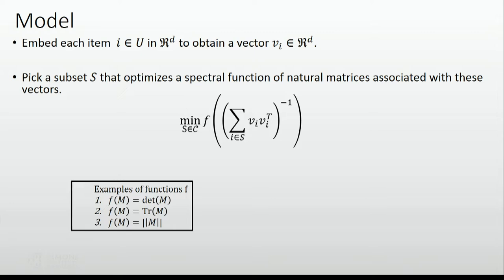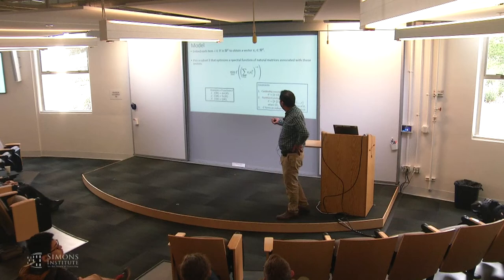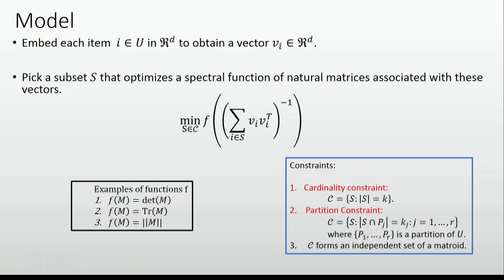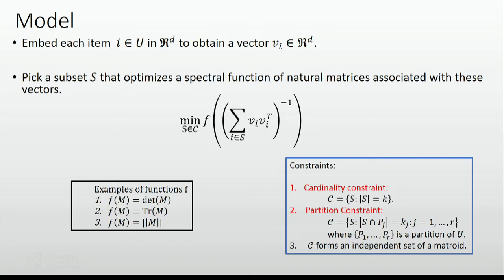The collection C can be constrained in several ways. The simplest is a cardinality constraint — picking a subset of cardinality K. Algorithmically, things are much better understood there. We also look at partition constraints: the ground set is partitioned into parts, and from each part I tell you how many to pick. More generally, these are matroids, and some of the theory generalizes to arbitrary matroids, some doesn't. In this talk, I'll focus on cardinality and partition constraints. We have to be careful: we're taking an inverse of a matrix, so if K is bigger than D, this matrix should be invertible. If K is less than D, we generalize concepts using elementary symmetric polynomials.